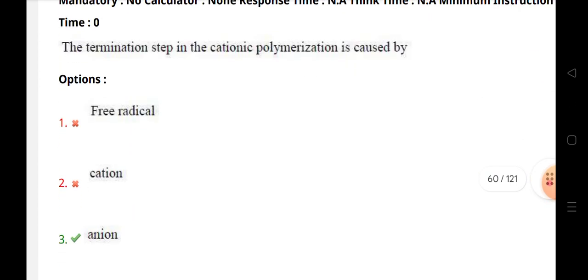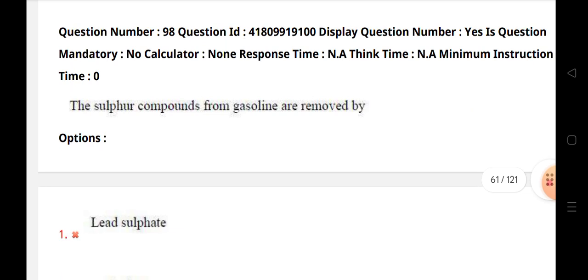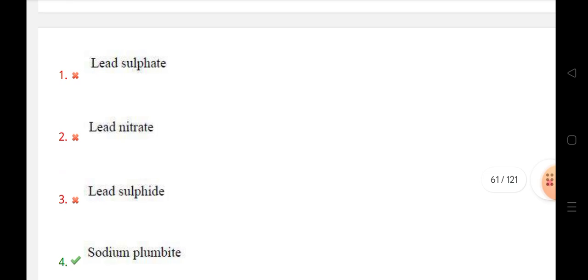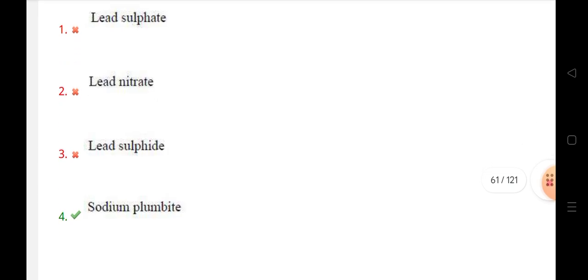The termination step in the cationic polymerization is caused by anion. The sulfur compounds from gasoline are removed by lead plumbate.